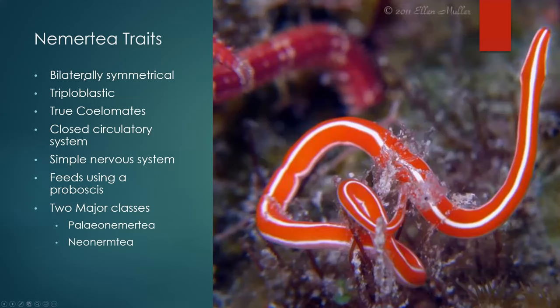Nemerteans are bilaterally symmetrical animals. They are triploblastic in their embryogenesis, and recent research has proven that these worms are actually true coelomates. They are protostomes, so their anus develops first after gastrulation.